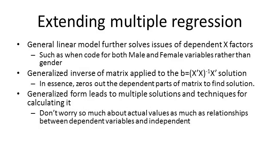The general linear model also solves the issue of dependent X factors — you don't have to worry about correlations between predictors. In fact, one reason to use GLM is to test if there are dependencies built in. A common example is coding both male and female as predictor variables, which are highly correlated since when someone is male they're typically not female. To deal with these correlations, there is a generalized inverse of a matrix — you pad the matrix with zeros on rows and columns where correlations exist. This is more complex than multiple regression but still works.